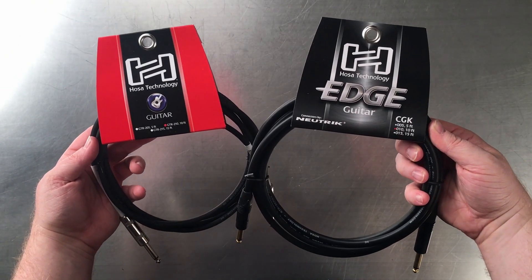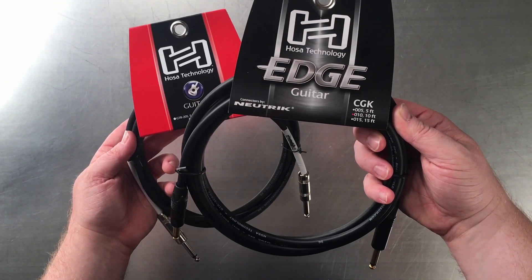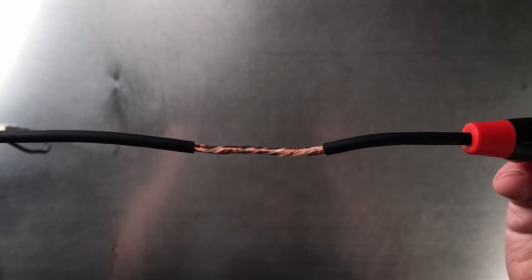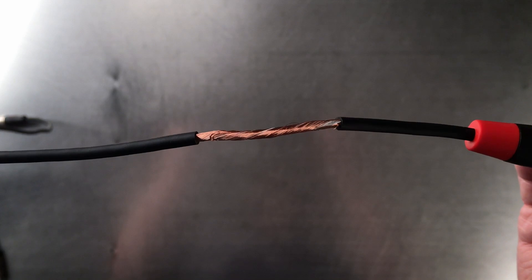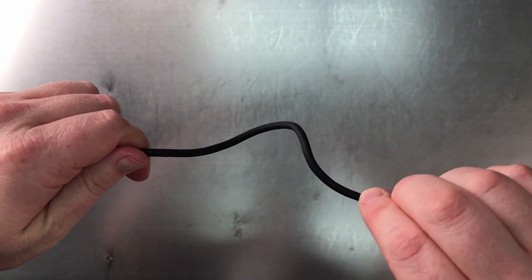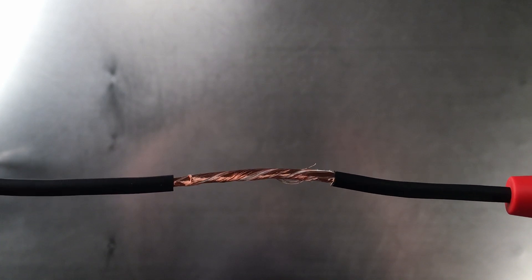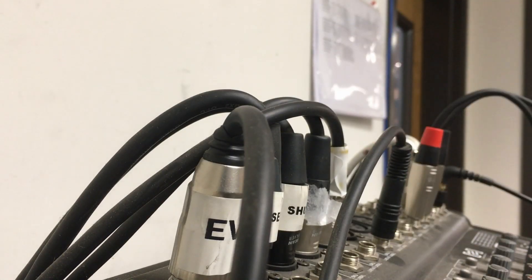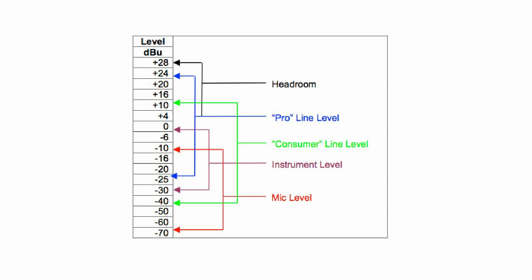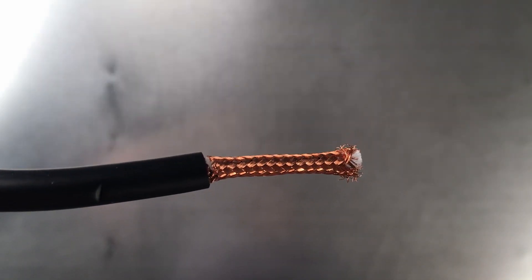Our guitar cables use braided shielding as well. Our standard series guitar cables provide 90% braid coverage, while our edge series guitar cables provide 95%. Spiral, or serve, shielding is similar to a braided shield, but instead of being woven together, the copper strands spiral around the conductor. It's more flexible, cheaper, and quicker to manufacture than a braid, but as it's bent or twisted, you get more opportunities for gaps in the shield to open and absorb interference as the strands unspiral. Our interconnects use spiral shielding, which is more than enough since they stay mostly stationary and their signal is already boosted to line level, which is less prone to pick up interference. Mic and instrument level is significantly lower, so any interference it picks up will amplify dramatically when the signal is boosted, hence the need for more robust braided shielding.